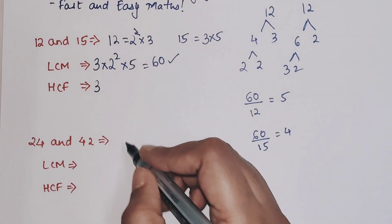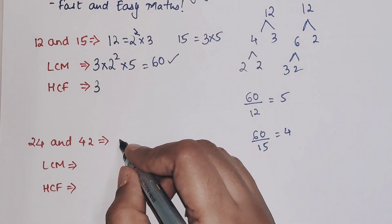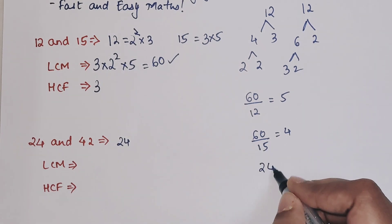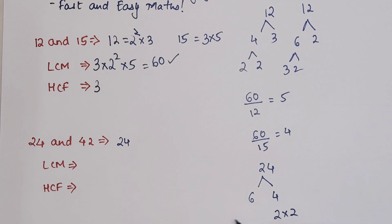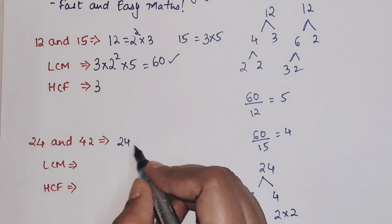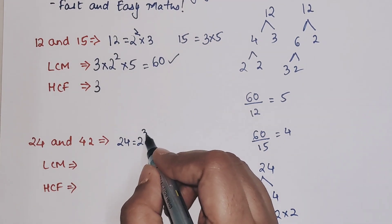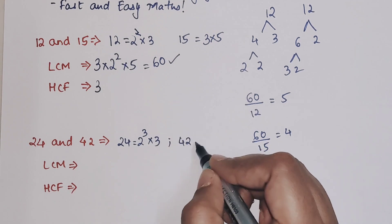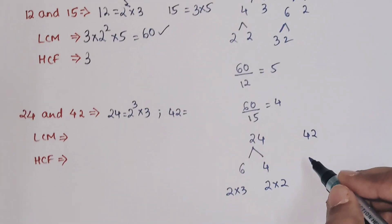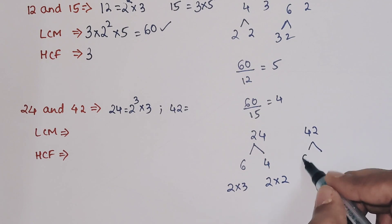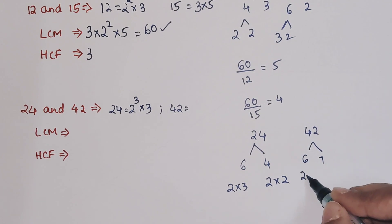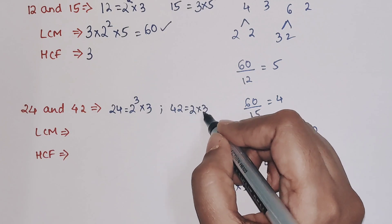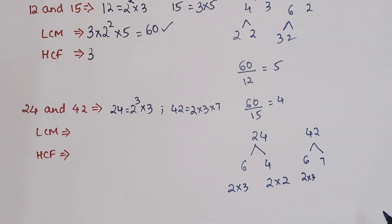Now very quickly let's do 24 and 42. 24 can be written as 6 into 4, so this is 2 into 2 and this is 2 into 3. So how many 2's are we looking at? Three. So 2³ into 3. Similarly, for 42, it can be written as 6 into 7, so this is 2 into 3, giving us 2 into 3 into 7.